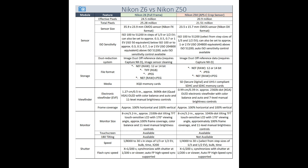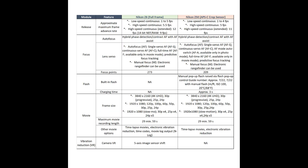Moving on to shutter speed: the Nikon Z6 can go down to 1/8000th of a second and also has an X200 mode, neither of which is available in the Nikon Z50 — the Z50 can only go down to 1/4000th of a second. That's a notable difference. Flash sync speed, however, is the same on both systems.